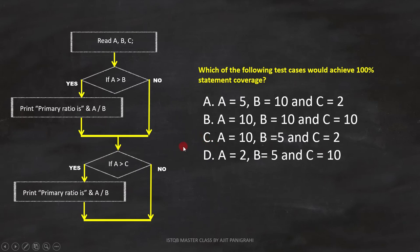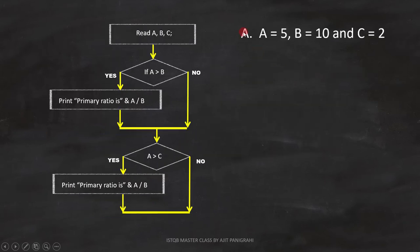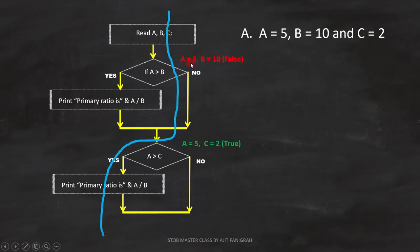Let's start with option A: A equals 5, B equals 10, and C equals 2. Here, A is not greater than B, and A is greater than C. So this path of the code will execute. But with this, we miss one statement. That is why option A is not the answer.